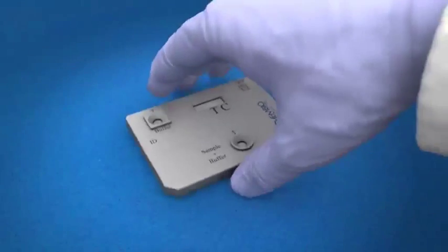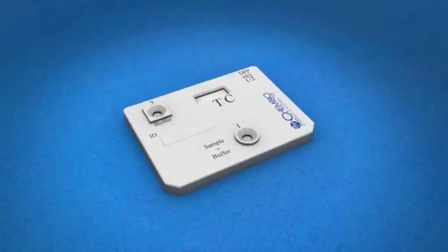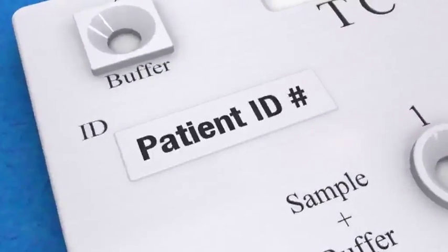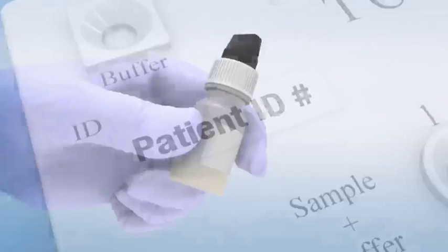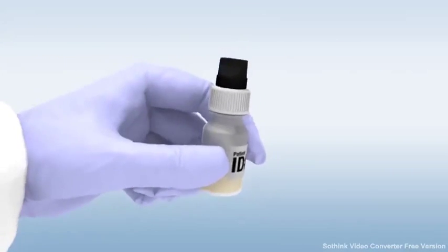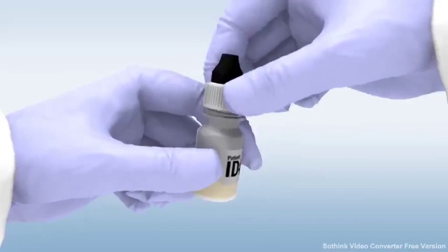Remove the DPP test device from the foil pouch and place it on a flat surface. Label the device with the patient identification number. Label the black cap sample tainer with the patient ID number, then remove the top by unscrewing the white cap from the bottle.